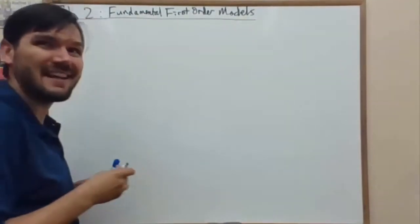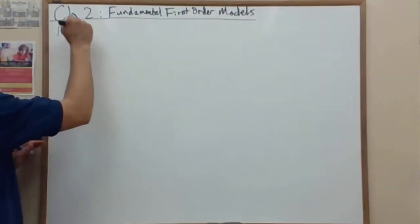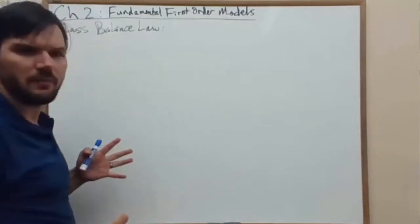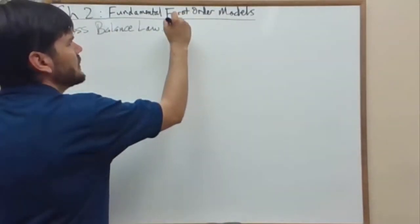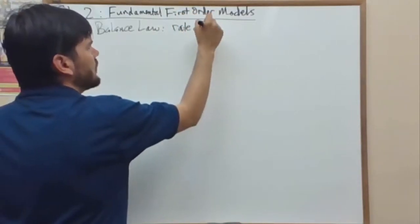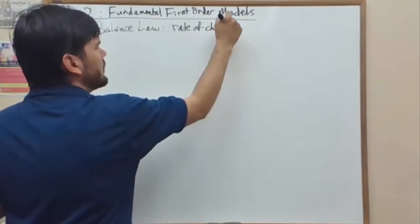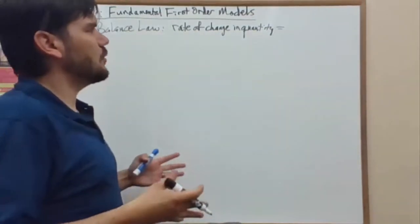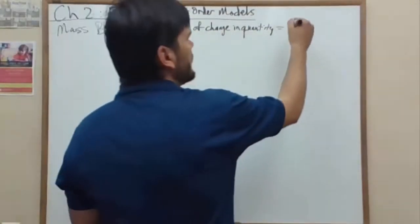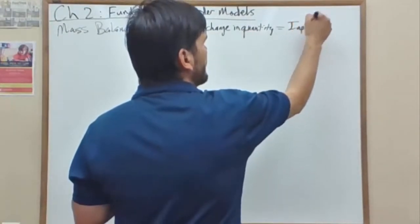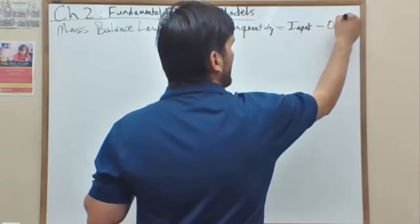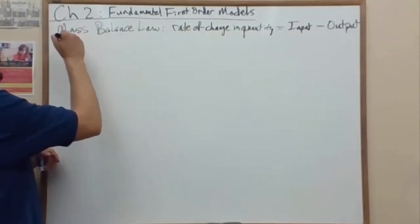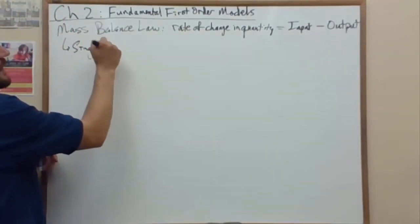First physical law we're going to look at is the mass balance law. This one is stated fairly simply at the beginning, but of course it's big and we need to fill in the details. So the rate of change in quantity, we can think of this as a derivative, is equal to the input change minus the output change.